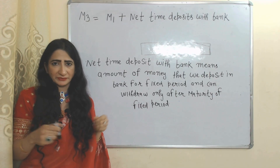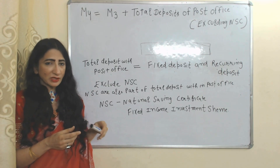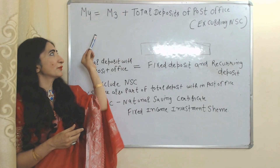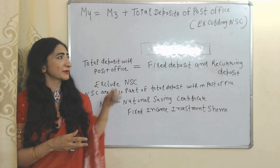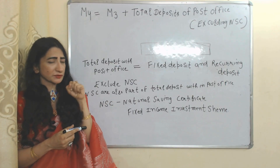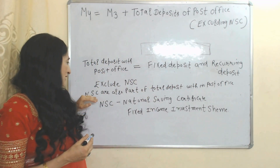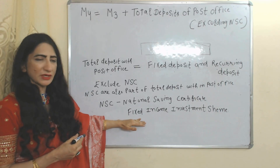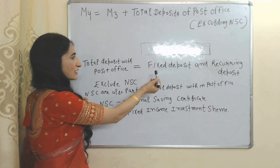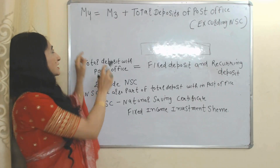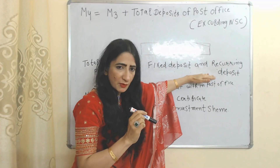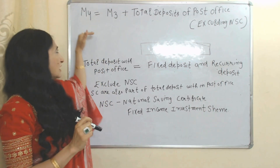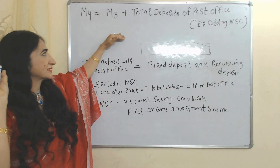The fourth measure is M4. M4 equals M3 plus total deposits of post office, but excluding NSC (National Savings Certificate). Total deposits of the post office mainly include fixed deposits and recurring deposits, plus NSC. NSC is a fixed income investment scheme. In M4, we only include fixed deposits and recurring deposits but exclude NSC.